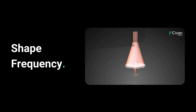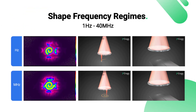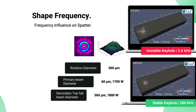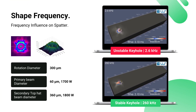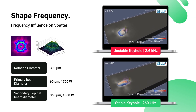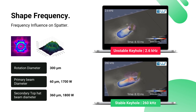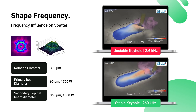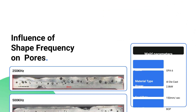Shake frequency is the time scale for completing the beam shape. The regimes range from 1 Hz to 40 MHz. The frequency at which the shape of the beam is created can impact the characteristics of a weld. Different frequencies lead to different welding processes by changing the melt pool lifetime, dynamics flow, and more.